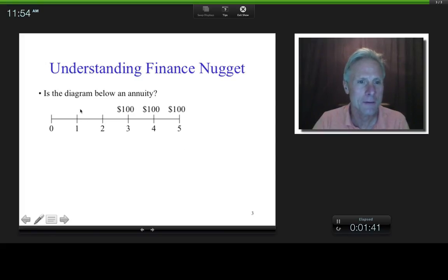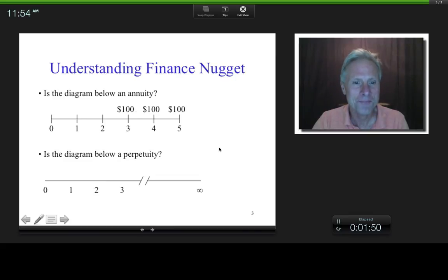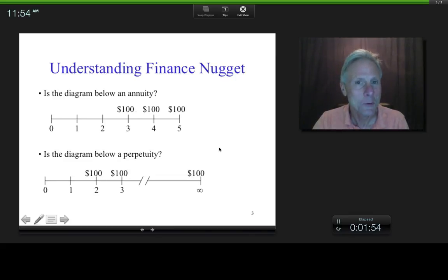I mean, the fact that there's nothing here implies zero dollars. So, this is an annuity that just happens to begin at time three. And, similarly, is that right down there? Is that a perpetuity? It's equal cash flows between equal time periods. It goes on forever and happens to start at time two. So, is that a perpetuity?